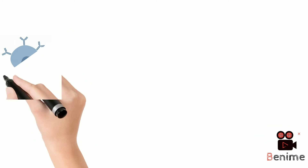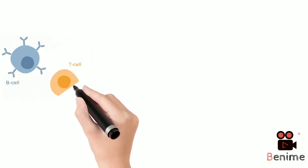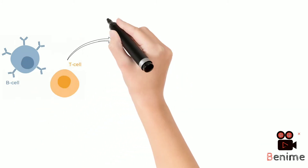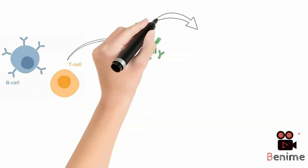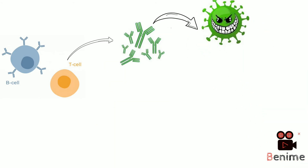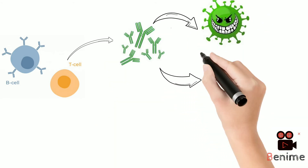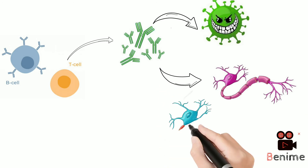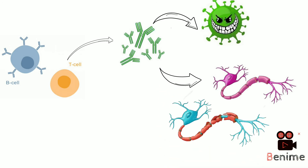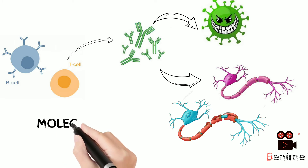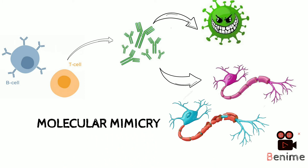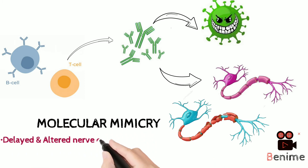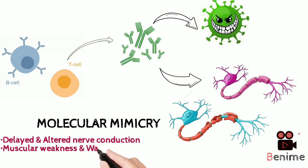Let's now understand it visually. When we get infected, our immune system makes antibodies against the pathogen. But sadly, they attack our own peripheral neurons as well, resulting in degradation of the axon and myelin sheath. All of this happens because of the phenomenon of molecular mimicry, which leads to delayed nerve conduction, muscle weakness, and eventually to paralysis.